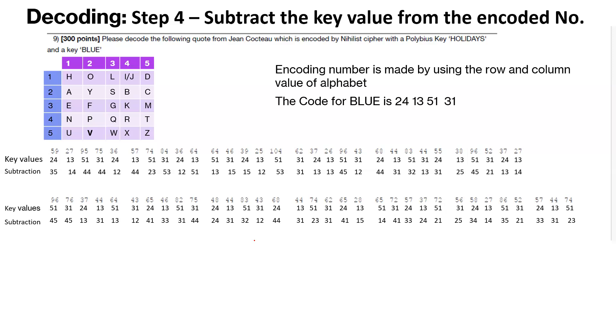So this was step four. We were able to subtract the encoded value or the key value from the encoded value to get our subtraction numeric value, which now we will translate back to the plain text by using this 5x5 grid. So now this is the final step.